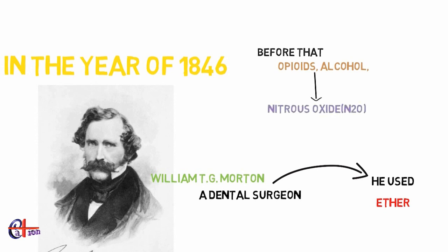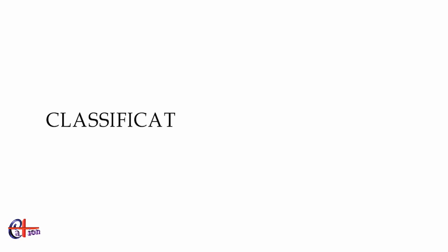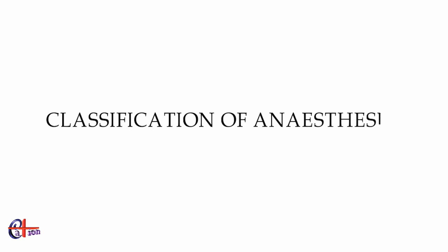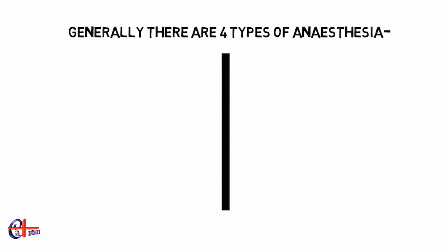Before Morton, opioids, mandrake root, and alcohol were used as anesthetics for surgery. Then nitrous oxide came into play, but the failure rate was so high that modern techniques were developed where a combination of anesthetics are used to achieve the goal.